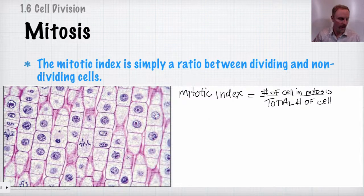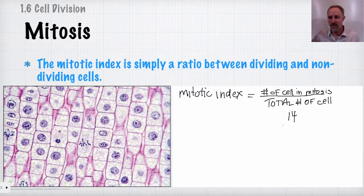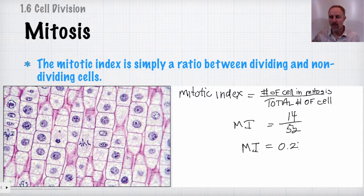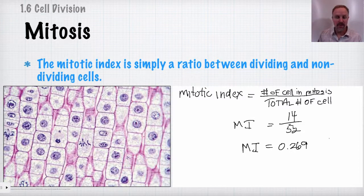Counting the cells in our example, we find 14 cells undergoing mitosis — counting metaphase, telophase, and other dividing cells — out of a total of 52 cells. So the mitotic index is 14/52 = 0.269. You can compare this number to the mitotic index of normal tissue to determine whether a tumor is forming or whether the organism is simply growing.